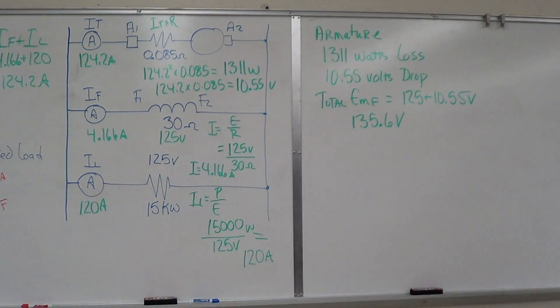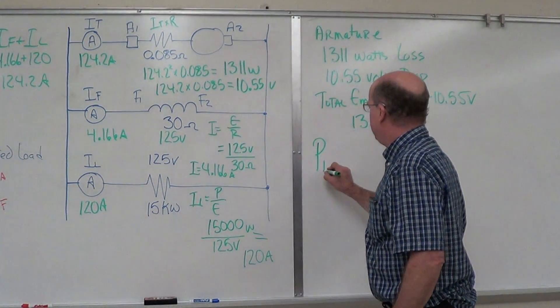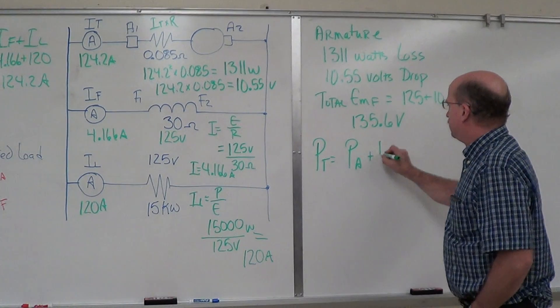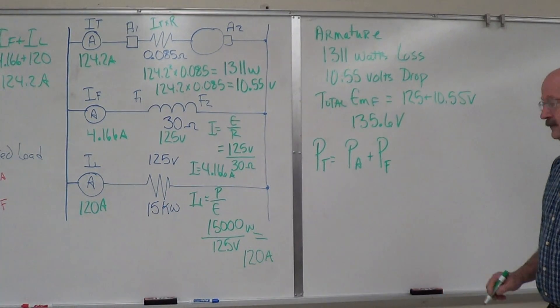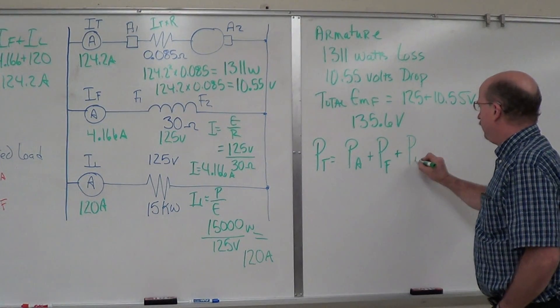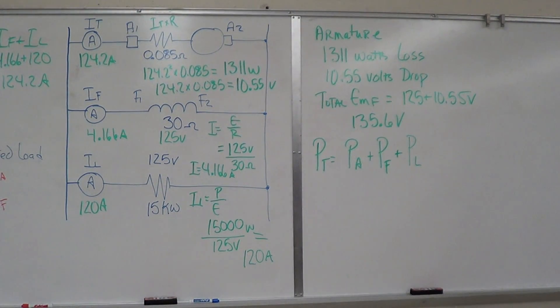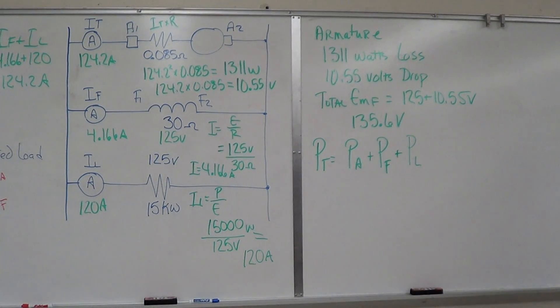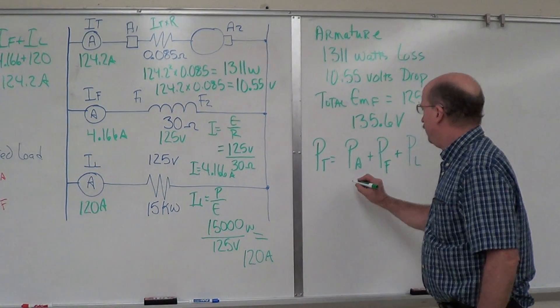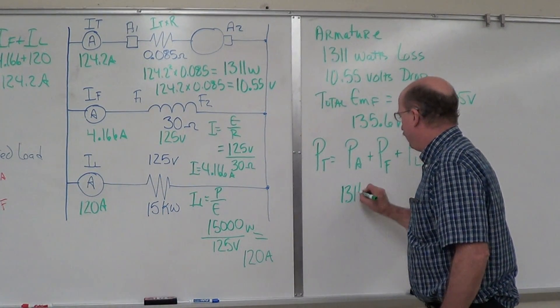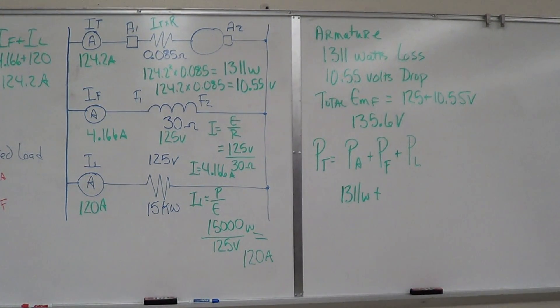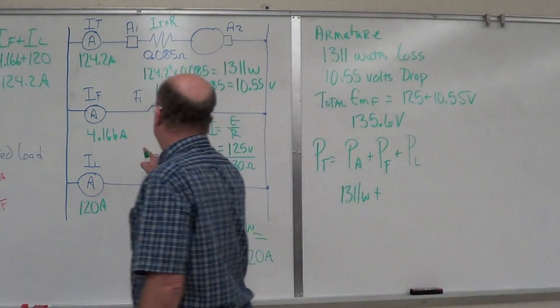Now we look at our total power generated by the armature. Our PT is the power in the armature plus power in the shunt field plus your power in your load. Power in the armature, we have 1,311 watts. Did we calculate the shunt field? No, we haven't done that yet. Let's calculate it.